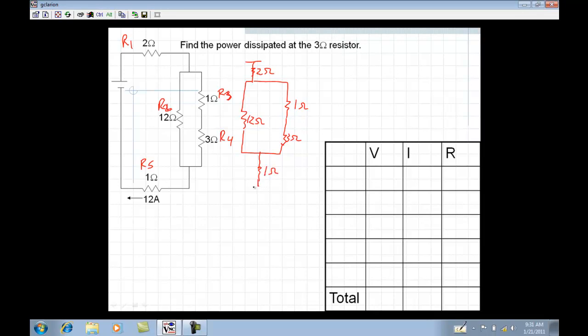The question is, besides filling out the VIR chart, we want to know what the power is dissipated at a 3 ohm resistor. So let's fill our VIR chart here. You're going to see some really important new little tricks that we can use in solving these. So R1, we're going to say that that's 2 ohms. R2 is 12. 1, 3, and 1. Anything else that I know from the original graph? At R5, we know that I've got 12 amps going through that. So through here, I've got 12 amps.